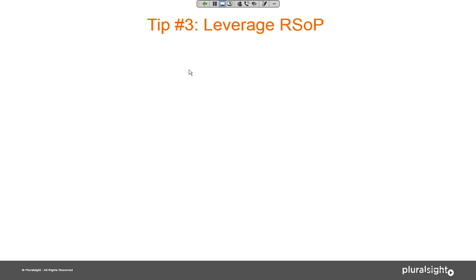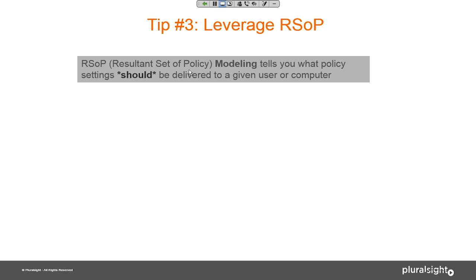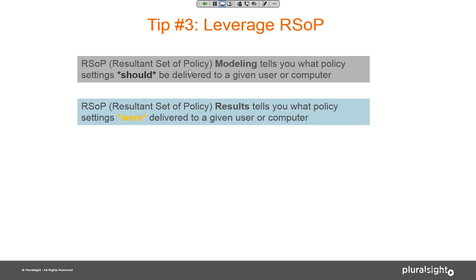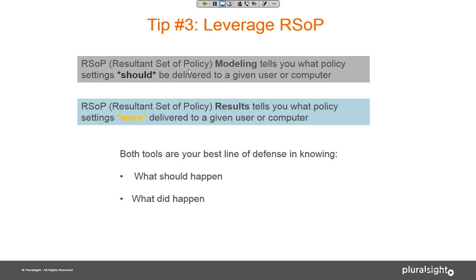Tip number three: leverage Resultant Set of Policy. This is a great feature Microsoft added in the XP days. RSOP does two things: RSOP modeling tells you what policies should be delivered to a given user or computer — modeling what you should get. RSOP results or logging tells you what policy settings were actually delivered to a given user or computer. Both tools are the first things I tell someone to use when they say they're not getting the settings they expected. The first two tips — understanding targeting and knowing what you're delivering — are both helped by using RSOP.